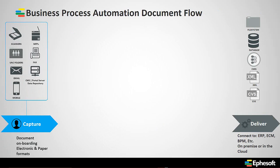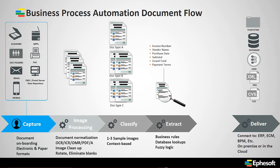Now with document process automation, the only manual requirements of the user are to feed the system documents from any source, like a scanner, copier, email, or even a mobile device like a phone camera. The image processing, classification, and extraction runs automatically.